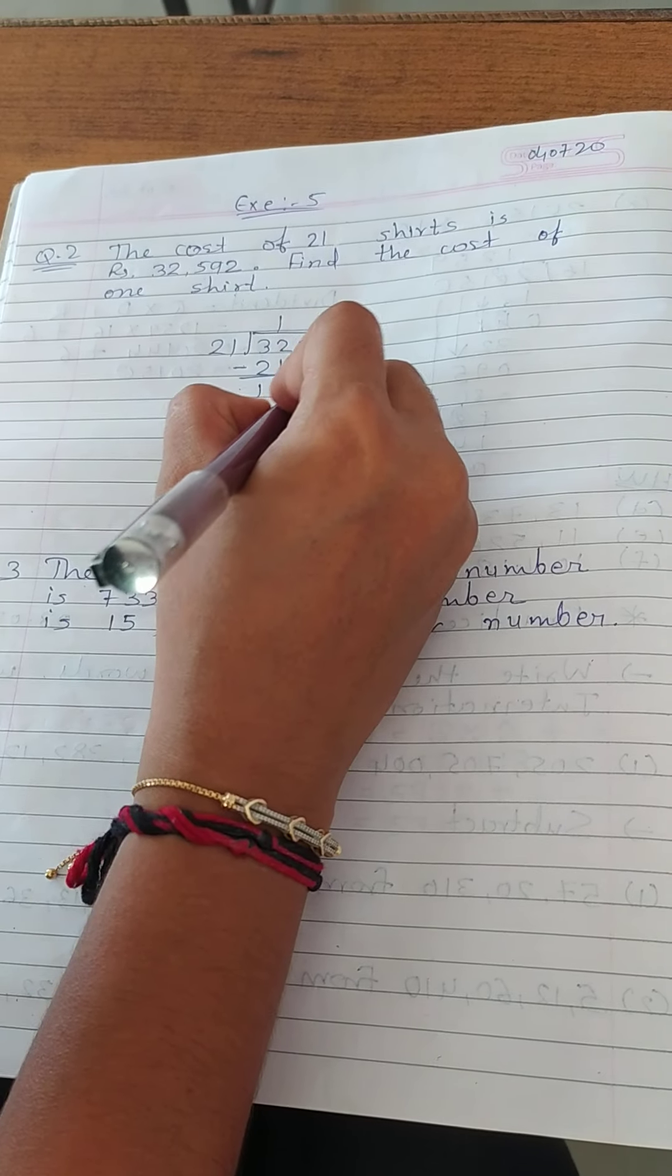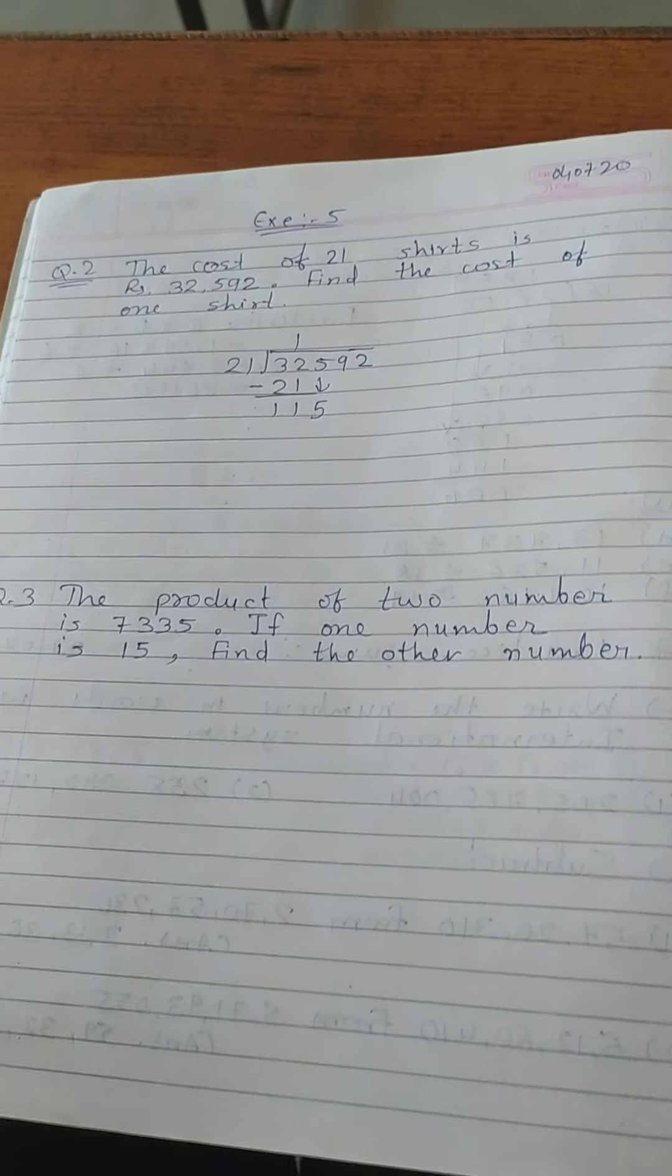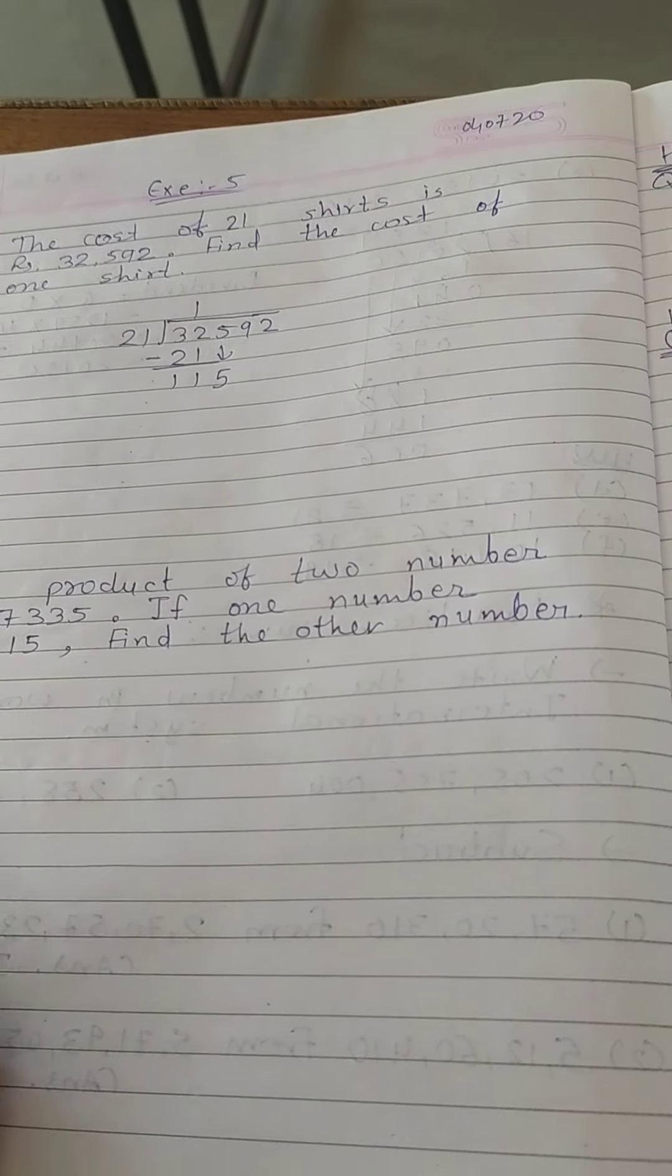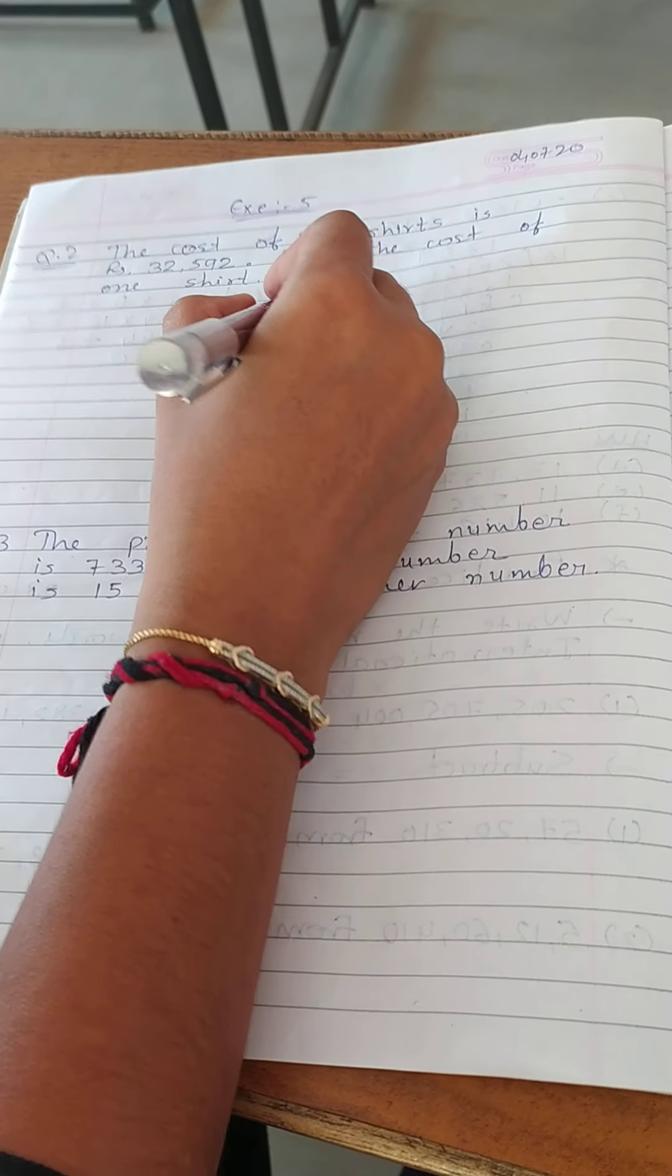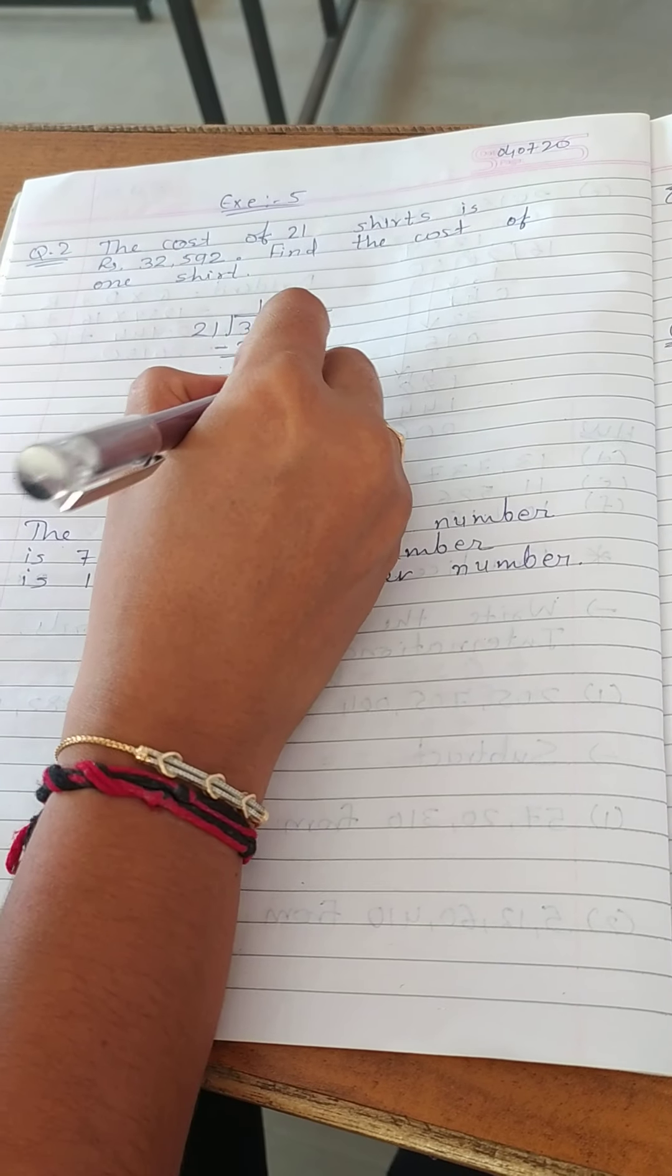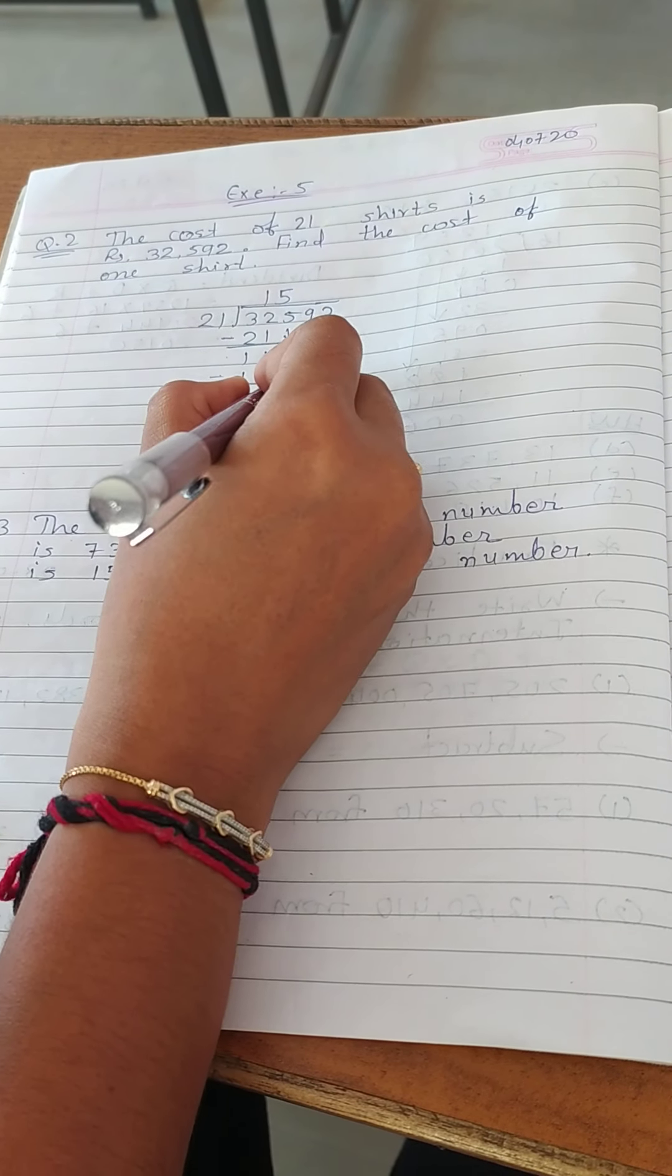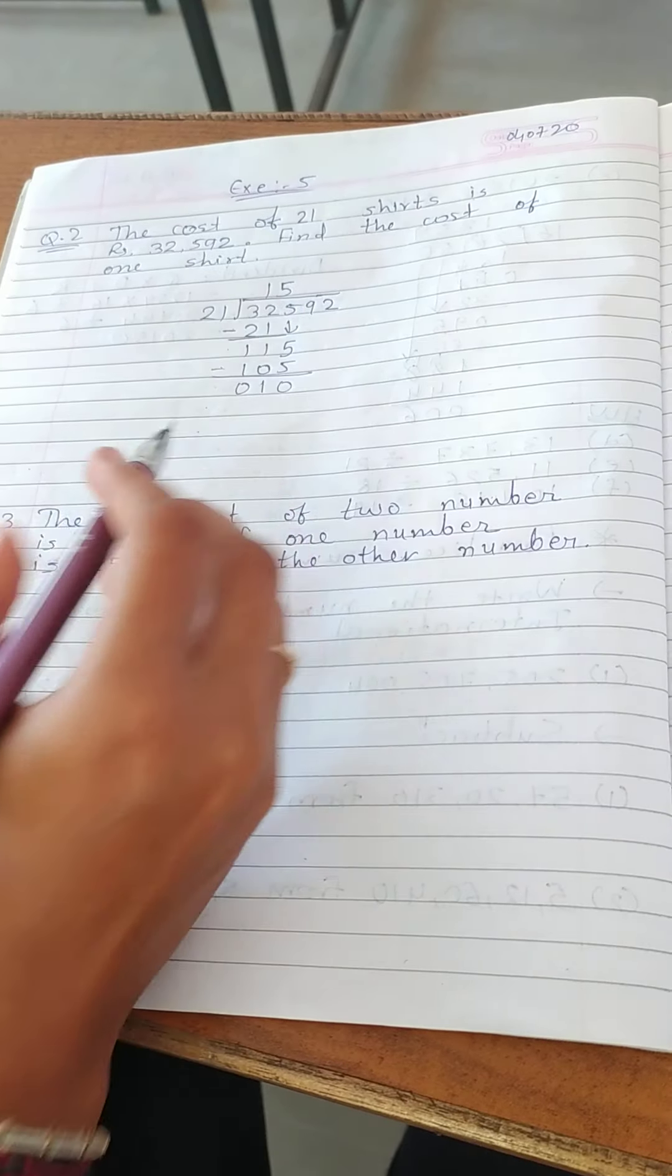Now drag the number 5. Now, 21 times 5 equals 105. 5 minus 5 is 0, 1 minus 0 is 1, and here is 0. Now here we have 10.